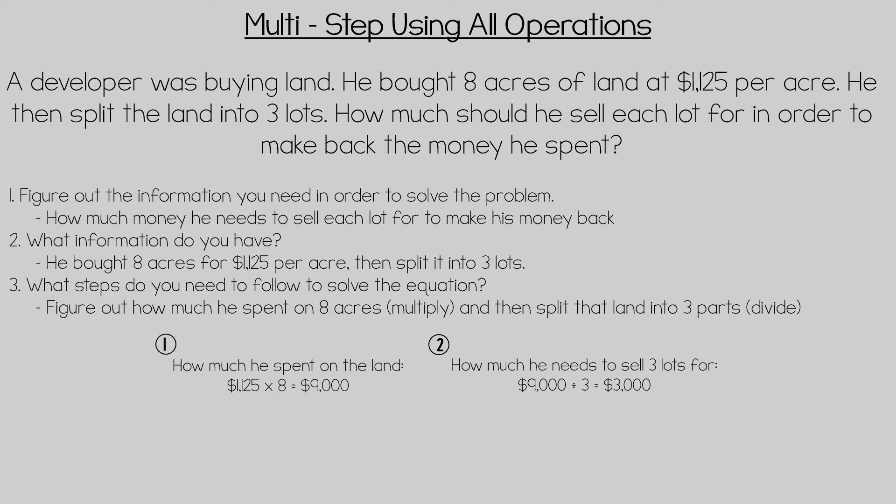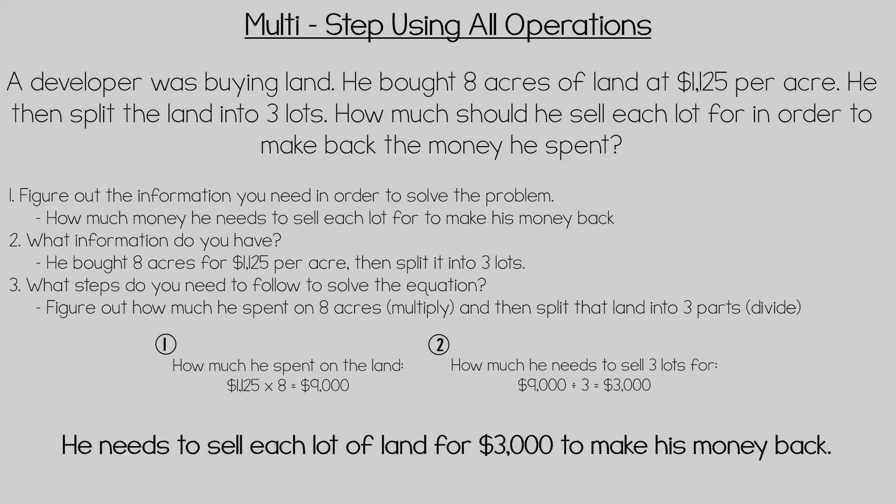How much money he spent on the land: $1,125 times eight equals $9,000, so he spent $9,000 on the land. How much he needs to sell each lot for once he splits it into three lots to make his money back: 9,000 divided by three equals 3,000. So he needs to sell each lot of land for $3,000 to make his money back.